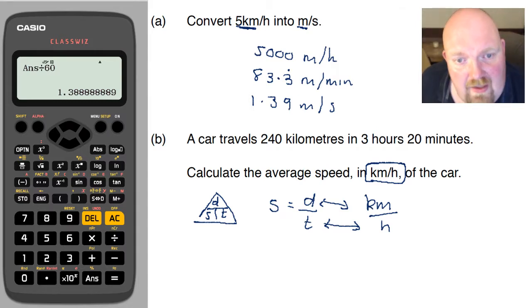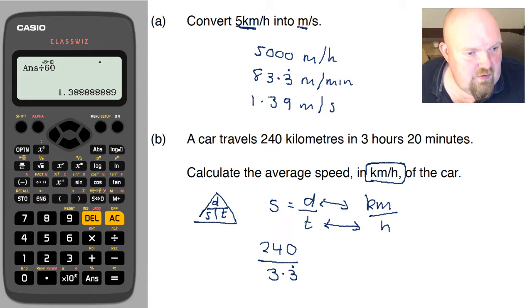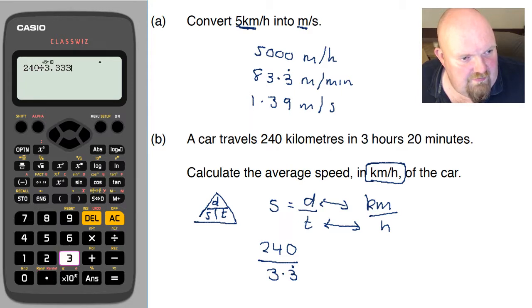So I've got the distance is 240, and 3 hours 20 minutes is 3 and a third hours, so 3.3 recurring. So if I now on my calculator say 240 divided by 3.333,